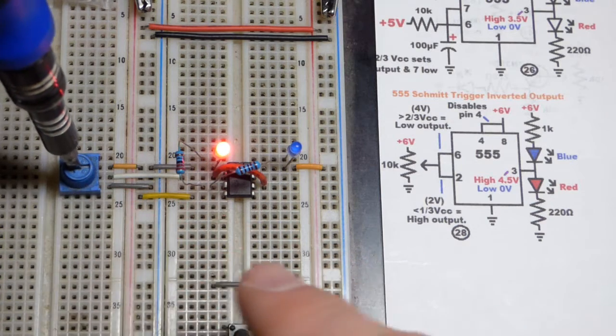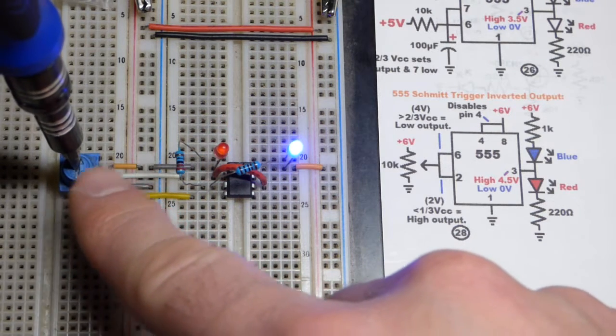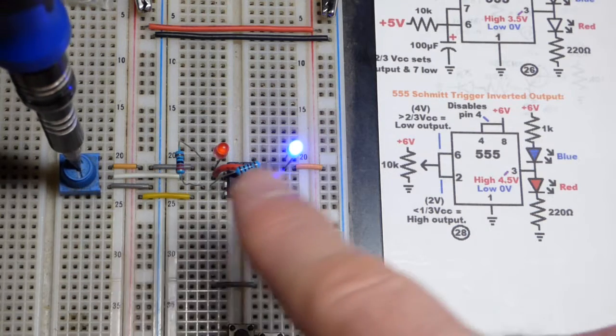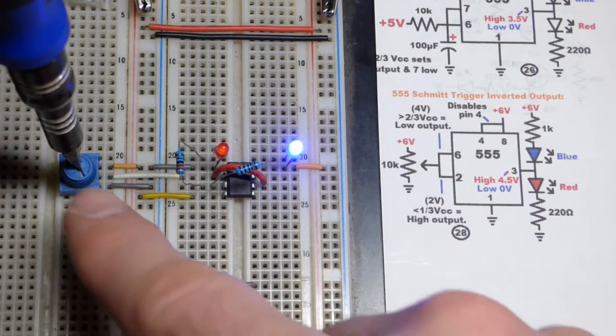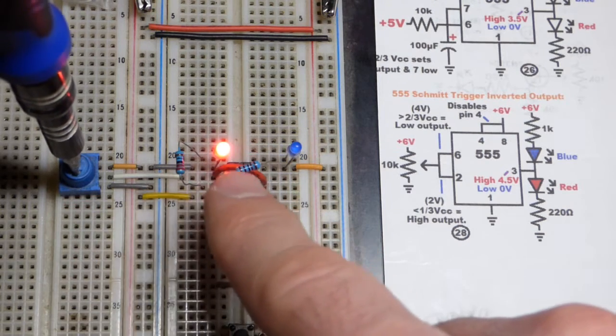So this is the hysteresis. Right in that middle range, to set the output low I have to go pretty positive right there. So a higher voltage, high enough voltage above two-thirds of the supply voltage, that will set the output low.